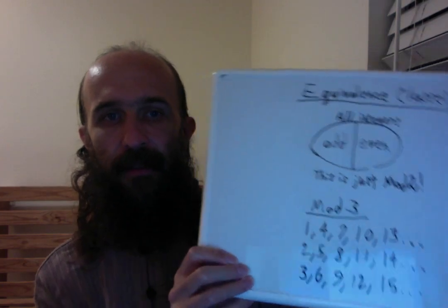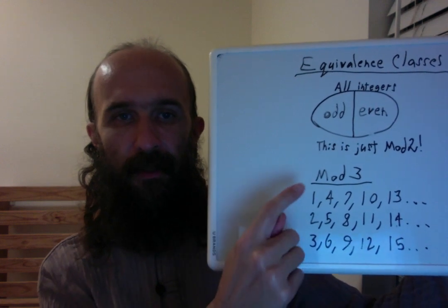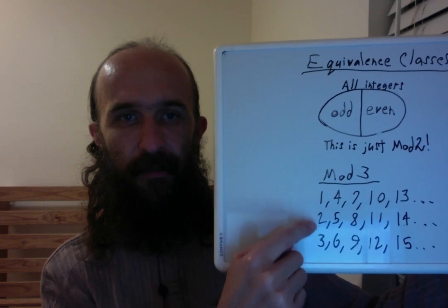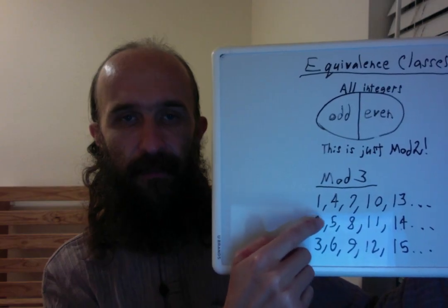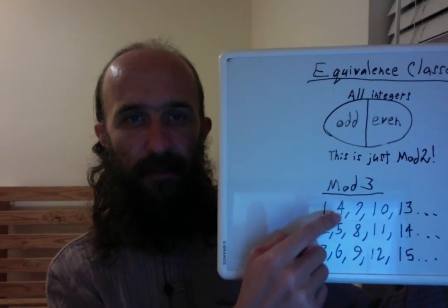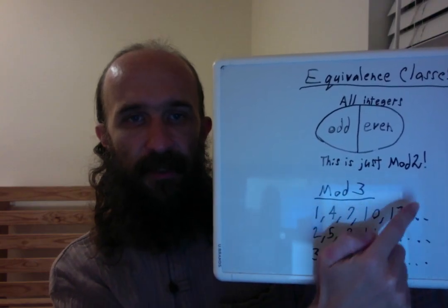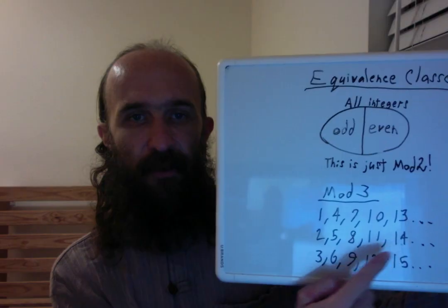We don't have to use mod 2 to get equivalence classes. We can use any modulus and get exactly that number of equivalence classes. So let's take a look at mod 3. If we count vertically, 1, 2, 3, and then go to a new column every three numbers — 1, 2, 3, 4, 5, 6, 7, 8, 9 — we get the three equivalence classes of mod 3.